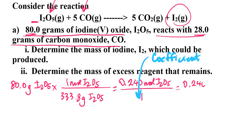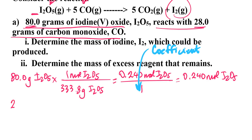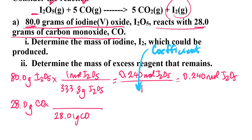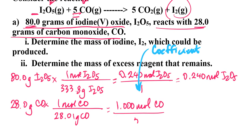Now I'm going to repeat the process for the carbon monoxide. I'm told to have 28.0 grams of carbon monoxide. The molar mass of carbon monoxide is 28.01 grams per mole of carbon monoxide. That's going to give me 1 mole of carbon monoxide, but the stoichiometric coefficient of carbon monoxide is 5. So I'm going to divide this by 5, and I get 0.200 moles of the carbon monoxide.